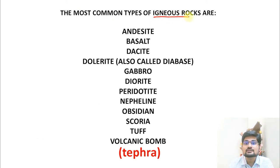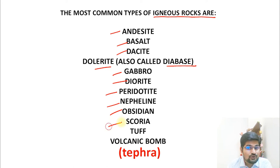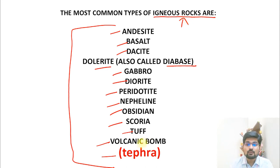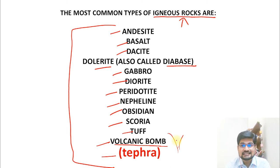The most common types of igneous rocks include andesite, basalt, dacite, dolerite (also known as diabase), gabbro, diorite, peridotite, nepheline, obsidian, scoria, tuff, volcanic bomb, and tephra. The volcanic bomb is part of the tephra material that comes out during volcanism. For more on volcanism, refer to the physical geography playlist.